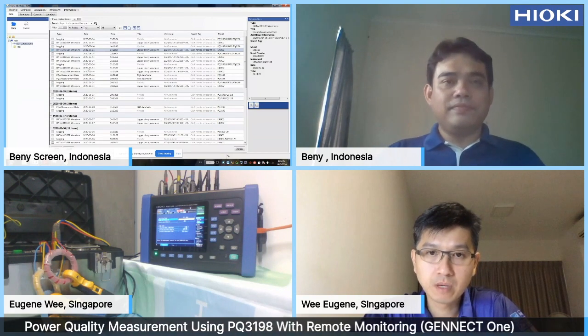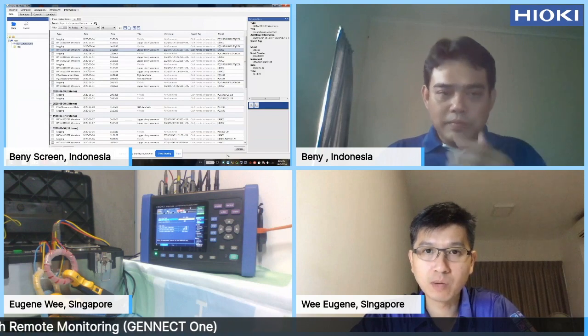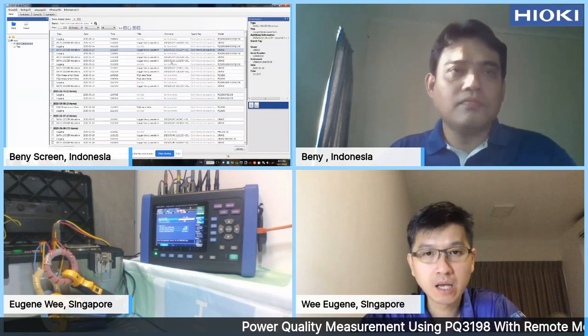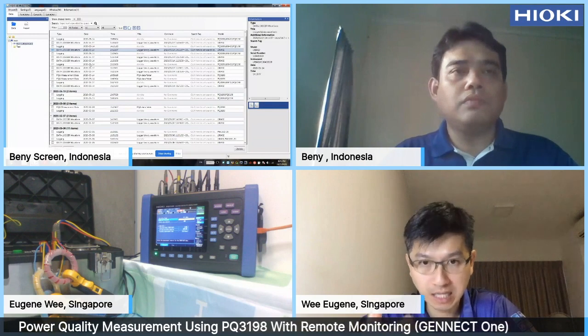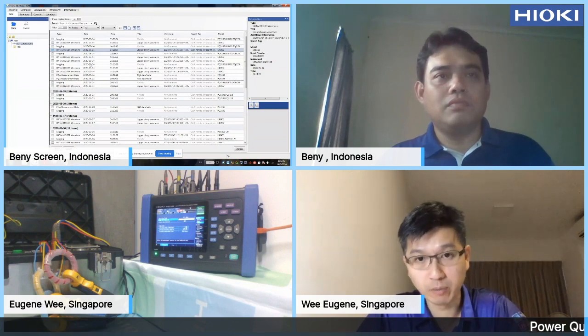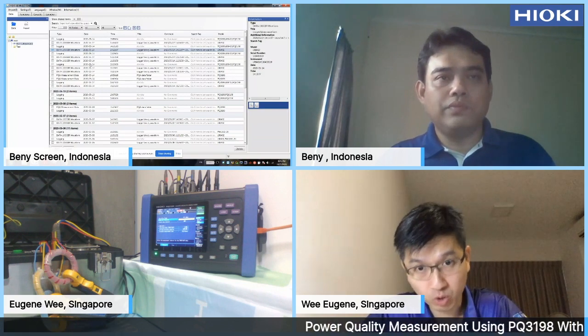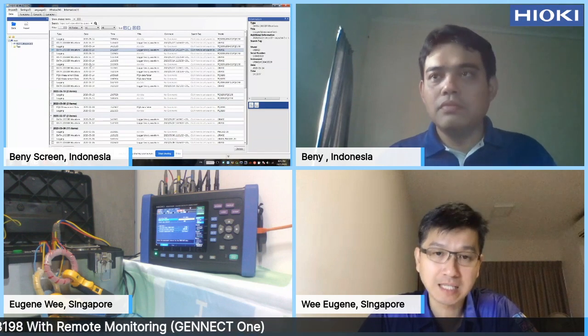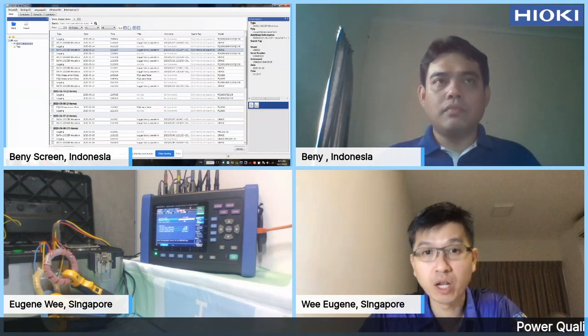Thanks, Benny, for your brief introduction on Genet One. To summarize: Genet One is able to do multiple measurements using multiple devices simultaneously. Benny showed how he used a data logger to capture temperature, a power logger to capture consumption, and a PQA to capture power quality problems — all three devices connected together, simultaneously collecting data. That's the potential of Genet One for remote monitoring. Thank you very much for taking your time. Stay safe, stay healthy, and see you. Bye-bye.